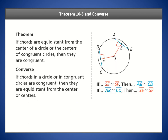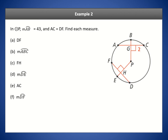Theorem 10-5 states that if chords are equidistant from the center of a circle, they are congruent. If the distance from the center to each chord is equal, the chords themselves are congruent. The converse states that if the chords are congruent, the distances from the center to those chords must be congruent.